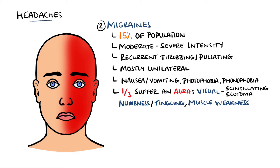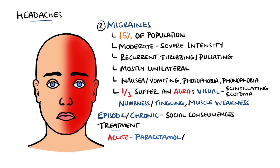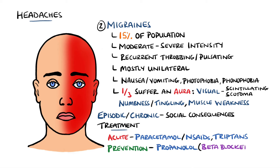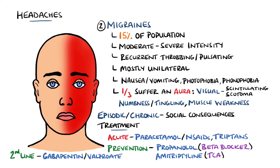As with other headache types, migraines may be classed as episodic or chronic, but it is important to consider that chronic sufferers of migraines are more likely to have more social difficulties, which will further add to their stress. The acute treatment involves over-the-counter medication such as paracetamol or non-steroidal anti-inflammatory drugs, followed by triptans if there is no improvement. Prevention is also important, and beta blockers such as propranolol or tricyclic antidepressants like amitriptyline may be used as first line, followed by anticonvulsants like valproate or gabapentin if a second line is needed.